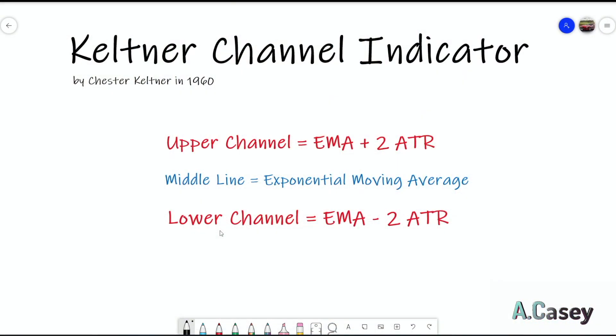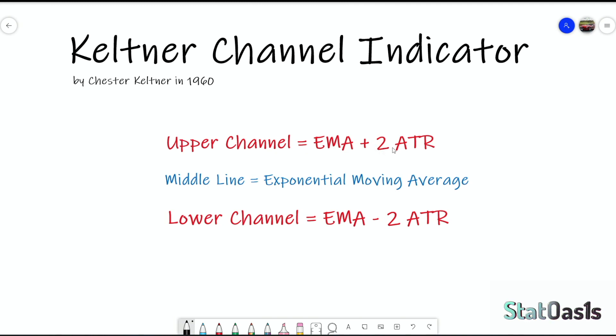The Keltner Channel is one of those indicators I love because they are reliable, versatile, and adaptable. You can use them in all kinds of strategies, instruments, and time frames. The indicator is really simple — it has three lines: the middle line, which is an exponential moving average; the upper channel, which is the EMA plus two times the average true range; and the lower channel, which is the EMA minus two times the average true range.